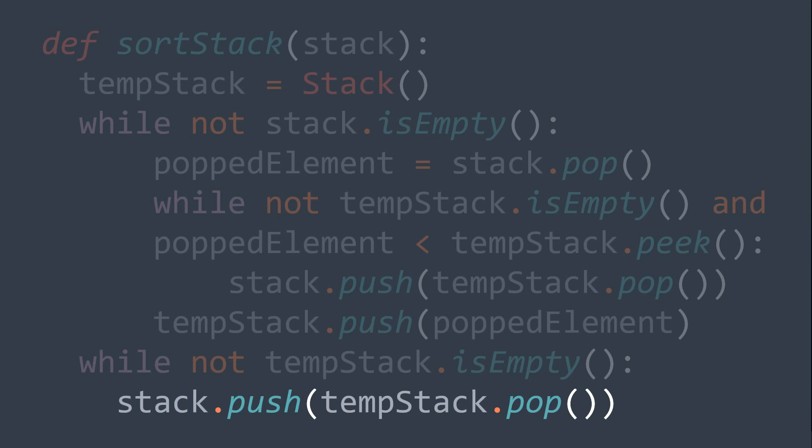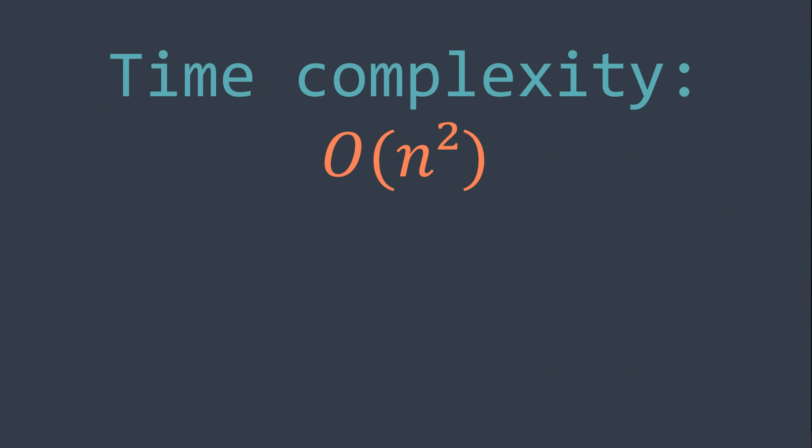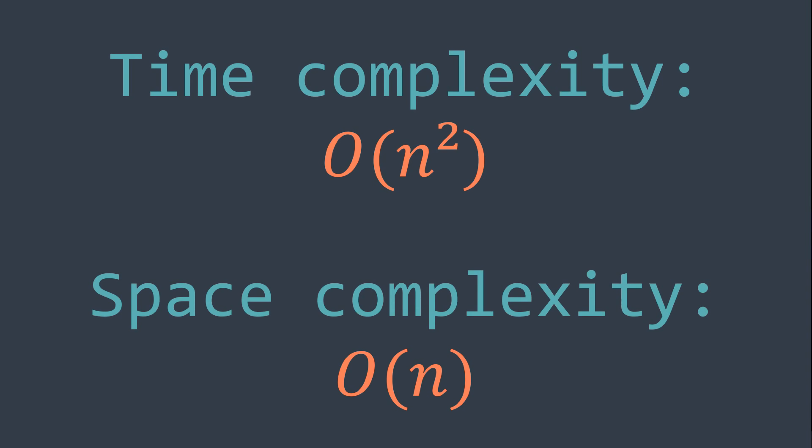The time complexity of insertion sort is O(N²), so our solution runs in O(N²) time complexity. For the space complexity, it's O(N) because of the temporary stack we used. Some of you may ask: can we sort a stack in less than O(N²) time complexity? Yes, we can by applying merge sort, which has a time complexity of O(N log N). But the problem is we would need more than one additional stack, which is not allowed in our problem description.